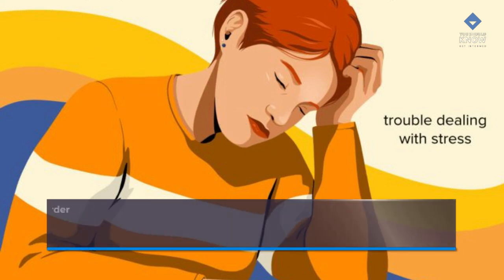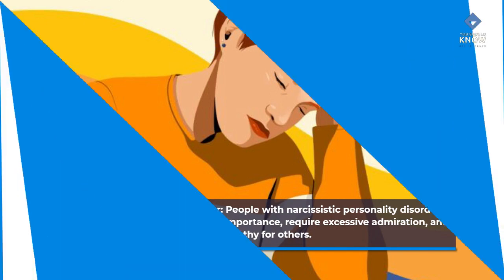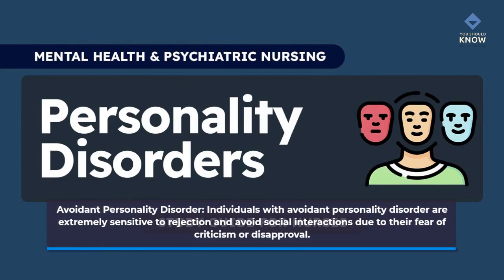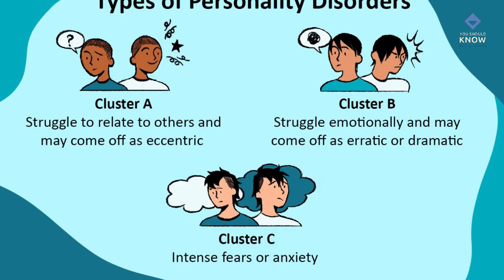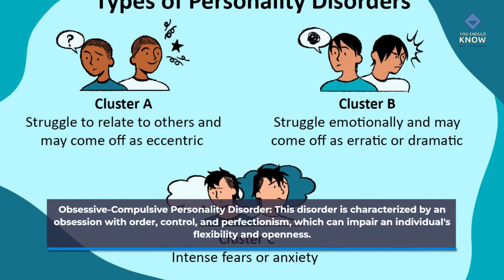Narcissistic personality disorder — people with narcissistic personality disorder have an exaggerated sense of self-importance, require excessive admiration, and lack empathy for others. Cluster C: anxious, fearful behavior. Avoidant personality disorder — individuals are extremely sensitive to rejection and avoid social interactions due to their fear of criticism or disapproval. Dependent personality disorder — people have an excessive need to be taken care of and fear separation from loved ones. Obsessive-compulsive personality disorder is characterized by an obsession with order, control, and perfectionism, which can impair an individual's flexibility and openness.